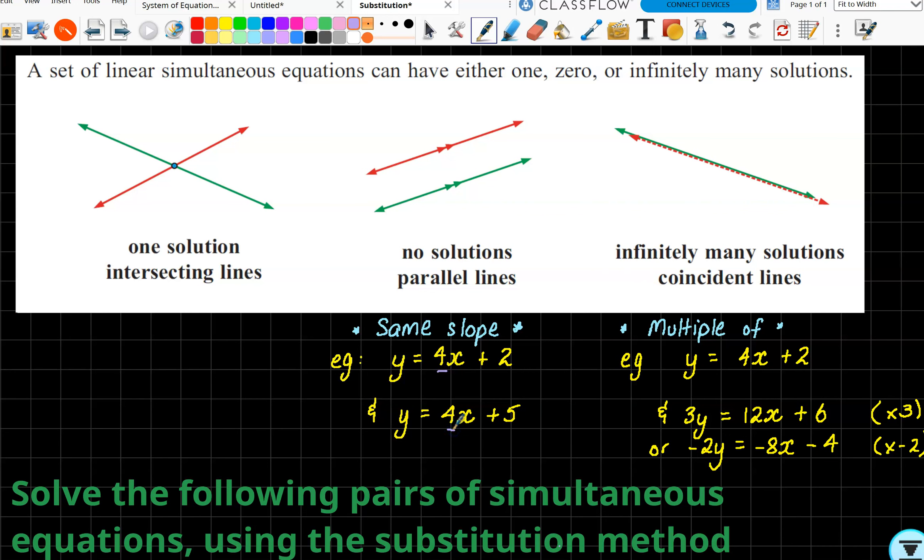When we've got it in our y-intercept form we can easily see they will have the same slope. The same thing applies if we have it in general form. So if we have, let's say, 4x - 2y, and the other equation would also have 4x - 2y. Now if this equals 5 and this equals 7, you will find that they will have the same slope but they won't necessarily have the same y-intercept, so these will also be parallel.